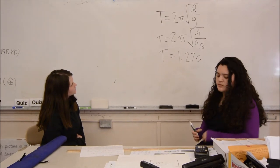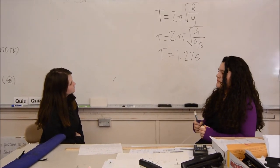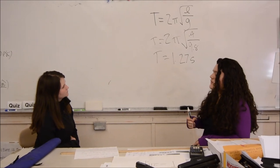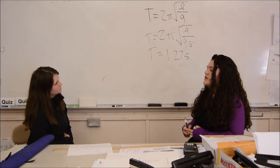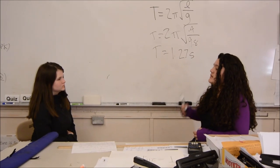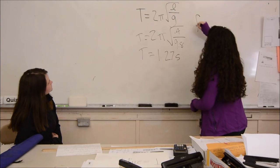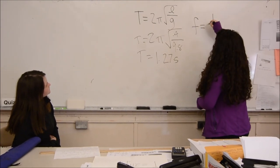There's also frequency when you're doing pendulums. Period and frequency are not the same thing. Frequency of the pendulum is how many cycles a pendulum completes in one second. It is the reciprocal of the period. So the equation for frequency is frequency equals 1 over period.